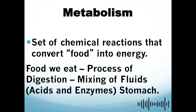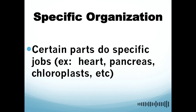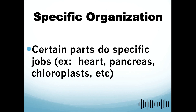For specific organization, certain parts do specific jobs. Examples include the heart, pancreas, and chloroplast. The heart is responsible for pushing about 5,000 gallons of blood through our body every 24 hours. The pancreas is a gland organ that produces insulin and other important enzymes and hormones that help break down food. If we eat too much sugar, the pancreas secretes insulin to prevent high blood glucose and diabetes.